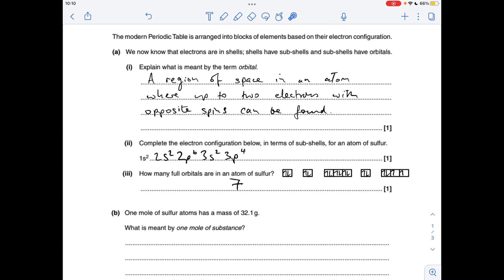The number of full orbitals in an atom of sulfur is 7, so I'll use the electrons in box representation to explain that.